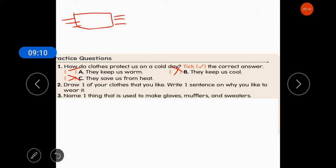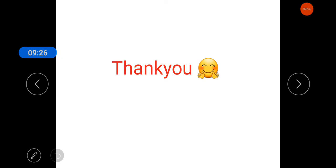Now, it's time for third question. Name one thing that is used to make gloves, mufflers and sweaters. Yes. So, what is used to make these things? Wool. I hope the practice questions are clear to you all. So, thank you everyone for watching this video.